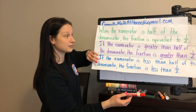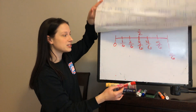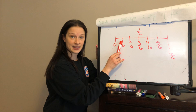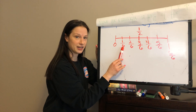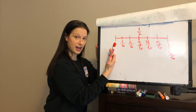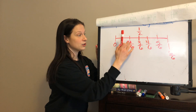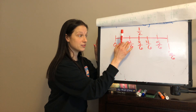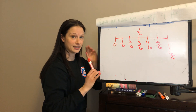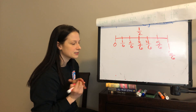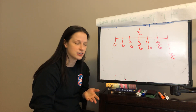We've seen all three situations. A numerator less than half of the denominator means the fraction is less than 1 half. Numerator less than half of 6 — half of 6 is 3 — so I know that fraction is automatically less than 1 half. So how do we use this when we're given fractions to compare?